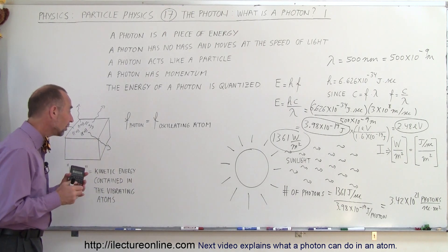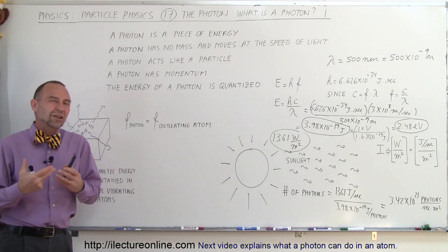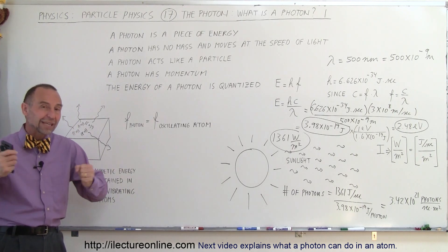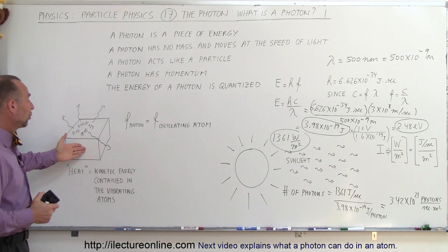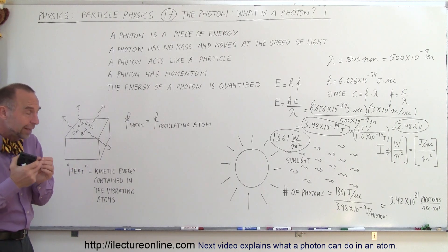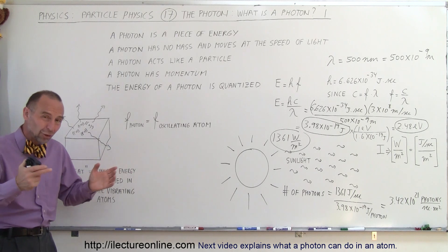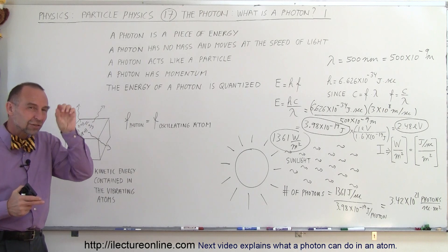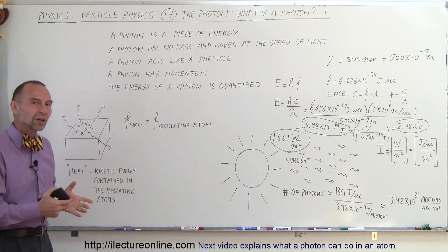Another way to look at this: all matter in the universe contains energy in the form of heat. Heat is really the kinetic energy contained in the vibration of atoms in an object. Any object — be it a chair, a person, or an ice cube in the freezer — has atoms and those atoms vibrate. The hotter the object, the faster the atoms vibrate; the colder the object, the slower they vibrate. As the atoms vibrate, they carry an oscillating electric field, and that oscillating electric field causes electromagnetic radiation to emanate from objects.